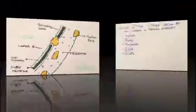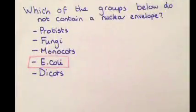Question 2 was, which of the groups below do not contain a nuclear envelope? Protists, fungi, monocots, E. coli, or dicots? The answer was E. coli.